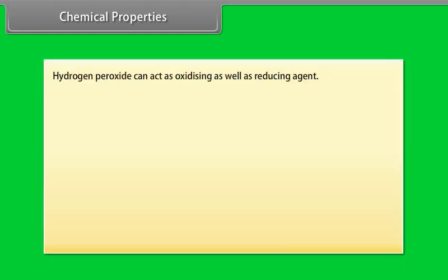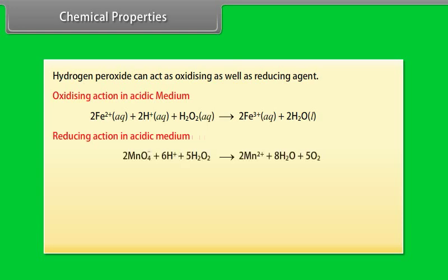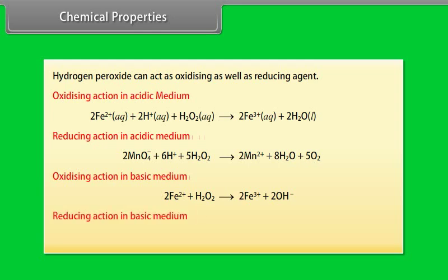Chemical properties: Hydrogen peroxide can act as oxidizing as well as reducing agent. It has oxidizing action in acidic medium, reducing action in acidic medium, oxidizing action in basic medium, and reducing action in basic medium.